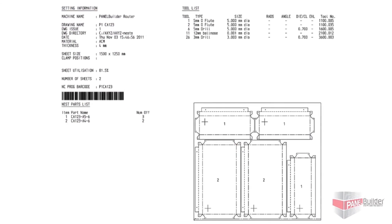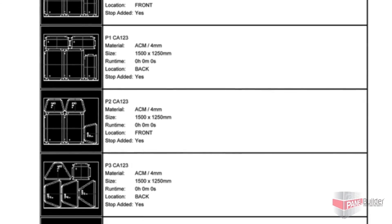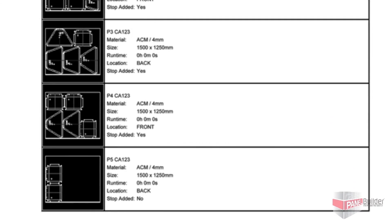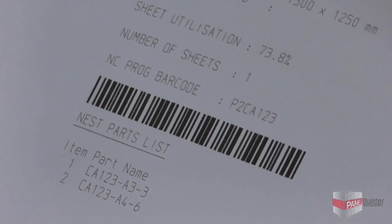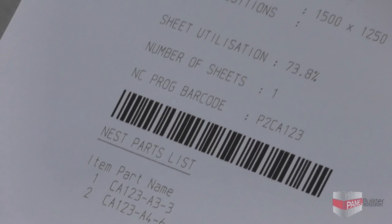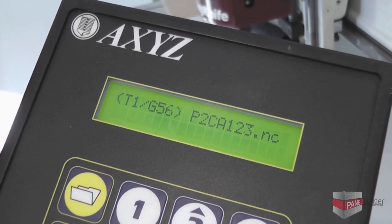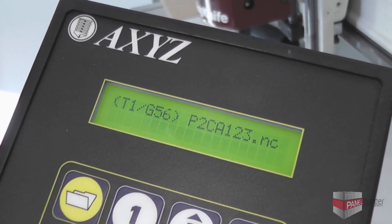Processing and keeping track of large volumes of panels is made easy by the automatic cutting reports, labels, and barcoding features available in Panel Builder. Machine programs can be loaded and run just by scanning a barcode, which helps to avoid mistakes and wasted materials.